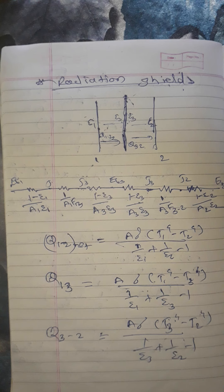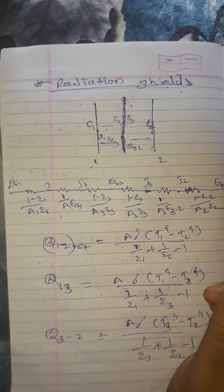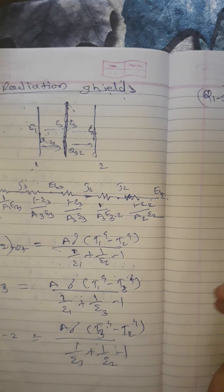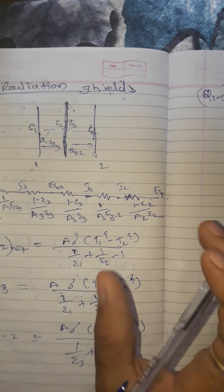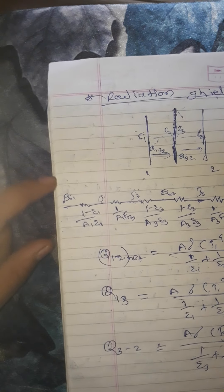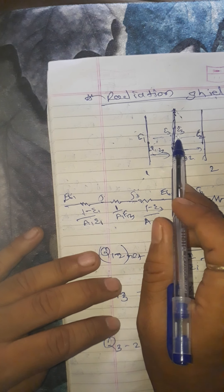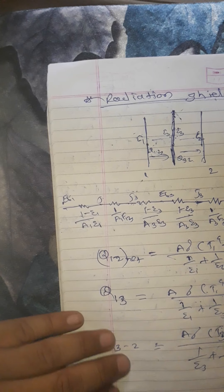This is done by either using a material which is highly reflective or by using a radiation shield. The radiation shield reduces the radiation heat transfer by effectively increasing the surface resistance. The surface having reflection has surface resistance, and in between two surfaces there is space resistance. Already we have drawn, using electrical analogy: surface resistance, space resistance, surface resistance, surface resistance, space resistance, and surface resistance.